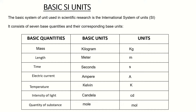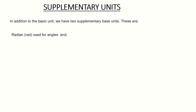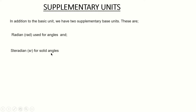We also have what are called supplementary units — just two of them. The first is the radian, used for measuring angles, so angle is the basic quantity while radian is the base unit. The second is the steradian, used for measuring solid angles. These are the two supplementary base units used in engineering.